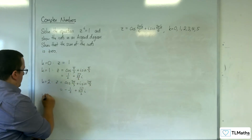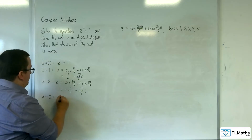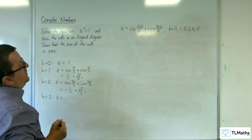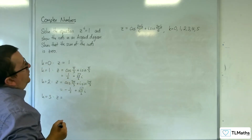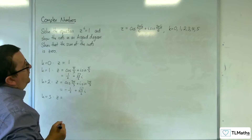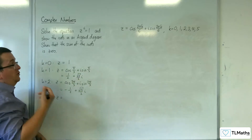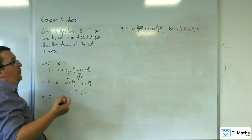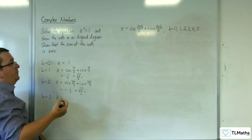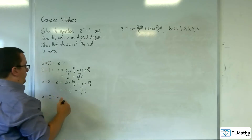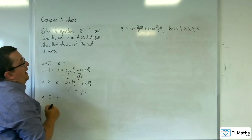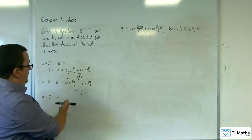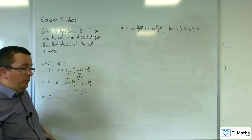When k is equal to 3, we get 6 pi over 6, so just pi. Cosine of pi is minus 1, and sine of pi is 0, so z equals minus 1.